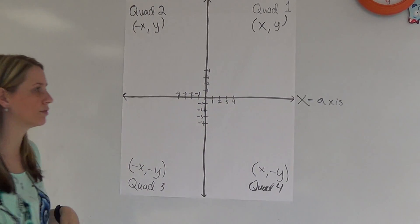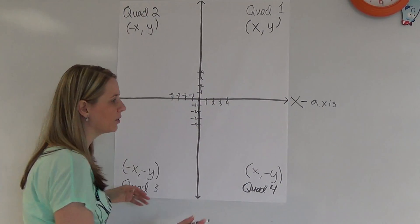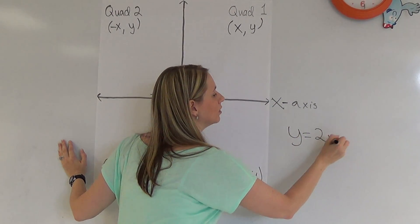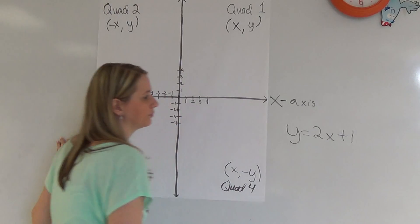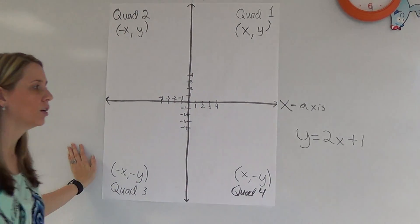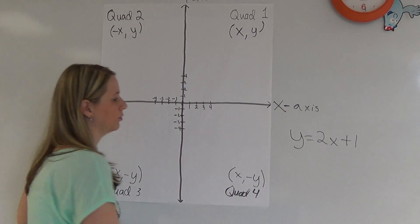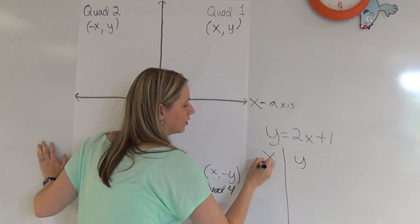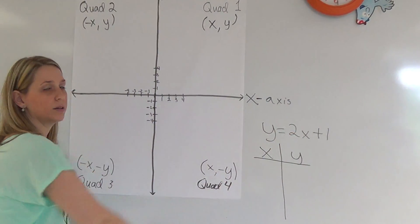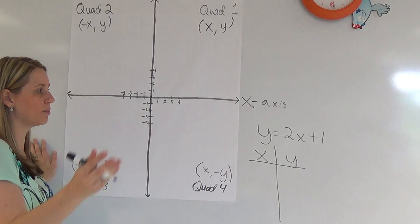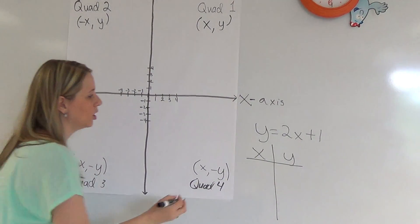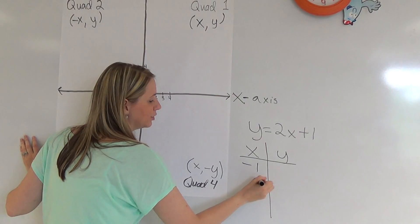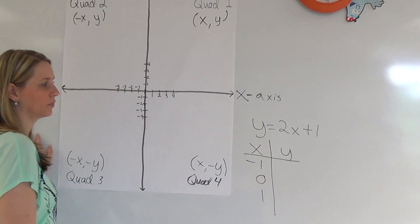So let's look at a graph. Let's say we have an equation that is y equals 2x plus 1. You can always create a table. What a table is, is you pick numbers for your x and you plug it in to find numbers for your y. So for example, let's pick some numbers. We'll do negative 1, 0, and positive 1.